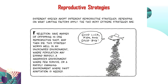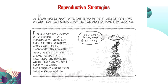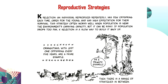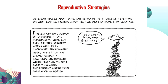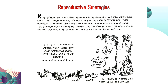Both strategies are effective for the organisms that use them. For fish, amphibians, and plants, R-selection is effective — that's why they still exist. For other organisms, K-selection works. Both strategies aim to ensure the survival of offspring, so there's no comparison that one is better than the other. It depends entirely on the species.